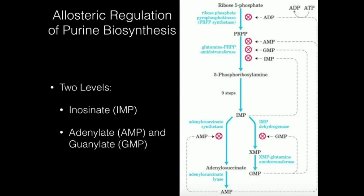Why is that important? If there's already enough AMP, then we don't need any more AMP, so it's going to inhibit itself. But that doesn't necessarily mean that if there's plenty of AMP, there's also plenty of GMP. AMP should not inhibit IMP dehydrogenase because AMP is in no way a sensor for GMP levels. AMP should only inhibit its own synthesis. Just because we have high levels of AMP does not mean we have high levels of GMP.